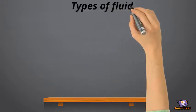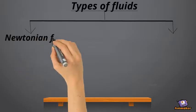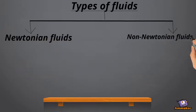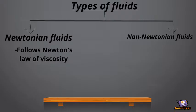Types of fluids. Generally, there are two types of fluids: Newtonian fluids and Non-Newtonian fluids. The only difference between them is that Newtonian fluids follow Newton's law of viscosity, and Non-Newtonian fluids do not follow Newton's law of viscosity.